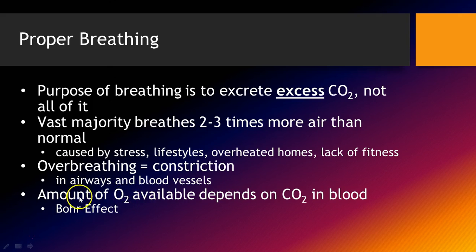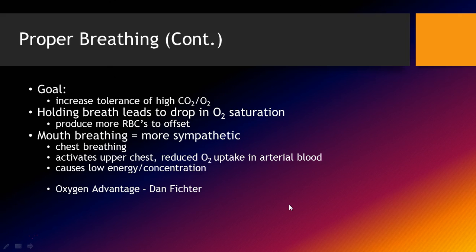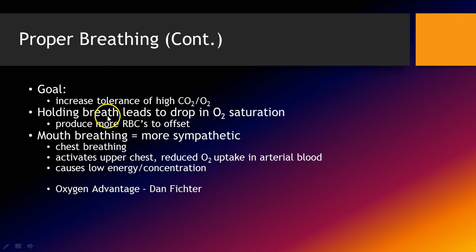One of the big things is that the amount of O2 available depends on the amount of CO2 in the blood — it's called the Bohr effect. The goal is to increase tolerance of high CO2 and high oxygen. Holding your breath during exercises leads to a drop in O2 saturation, which then produces more red blood cells to offset the effects.